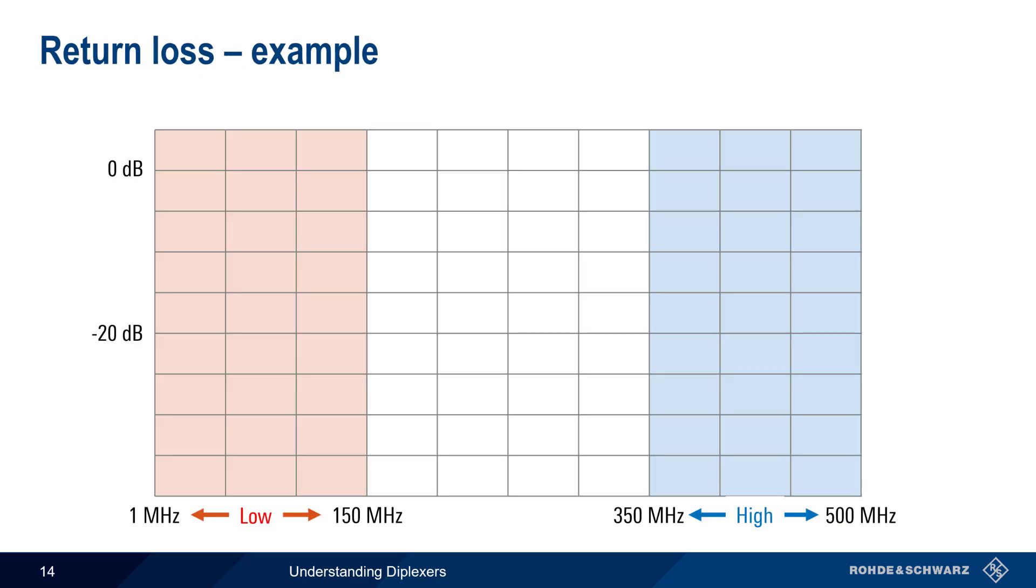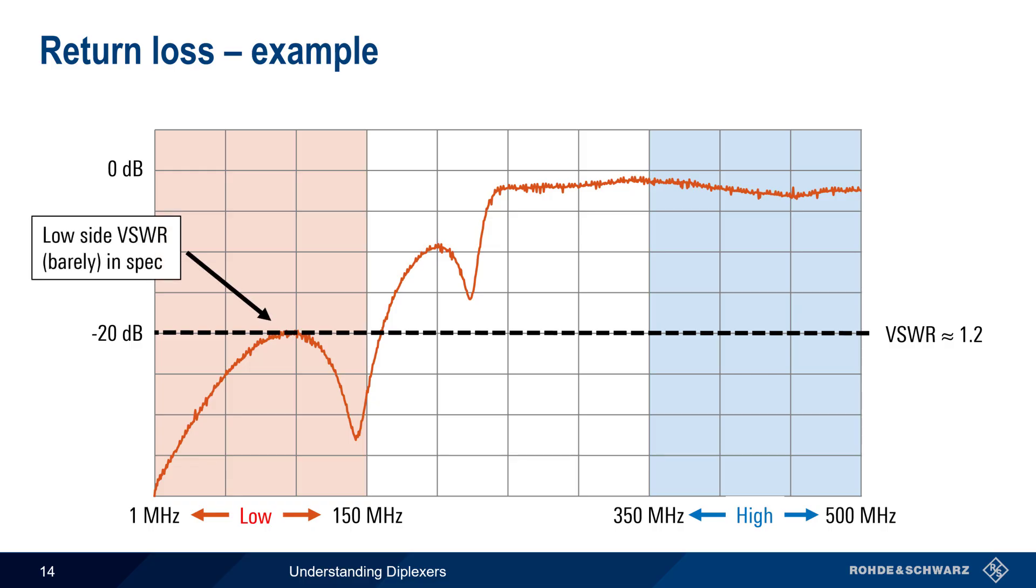Let's look at some return loss measurements on the low and high ports of our diplexer. This diplexer specifies a VSWR of less than 1.2 over each port's frequency range, which corresponds to a return loss of approximately 20 dB. Looking at the low port, we see that VSWR does stay, just barely, below 1.2 over the specified low side input range, and there is a sharp increase in return loss near 145 MHz.